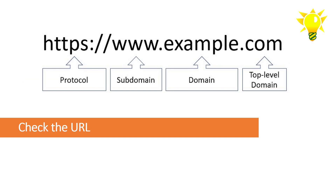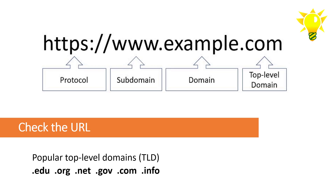Check the URL — it can tell you a lot about the web content. Examples of popular top-level domains include .edu, .org, .net, .gov, .com, and .info. Keep in mind that the top-level domain does not tell you much about the reliability of information, but it does tell you the likely type of information you can expect to find. For instance, the .edu suffix tells you the material is published by an educational institution, but these URLs also include students' personal websites that are not vetted by the educational institution hosting the content.